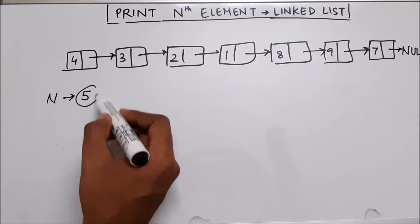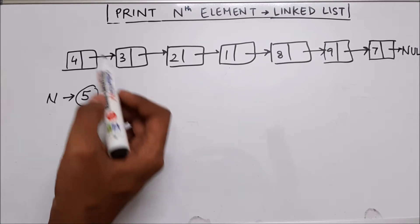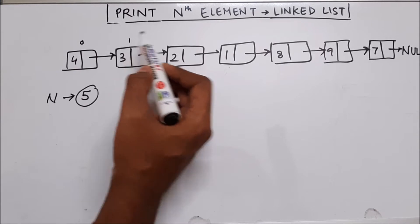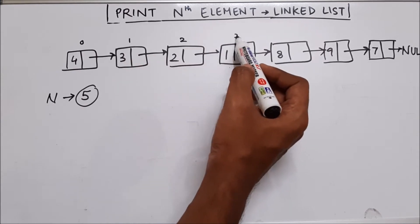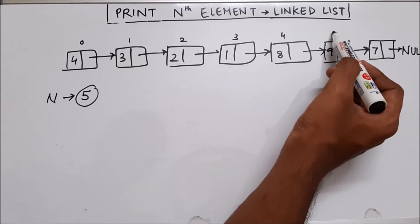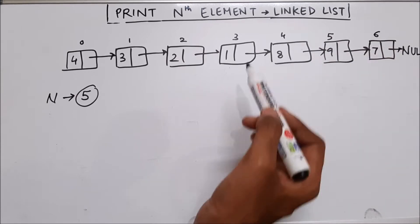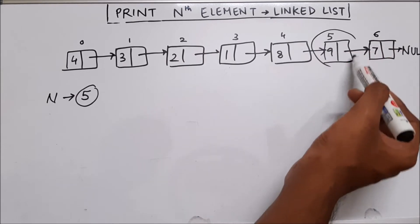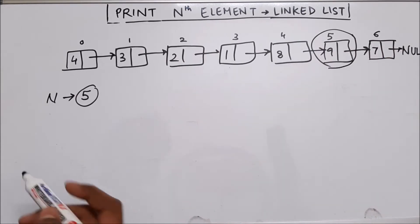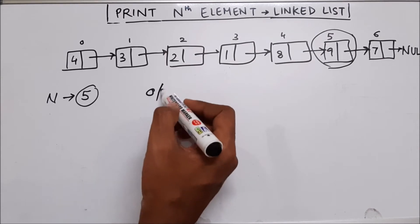So it means we have to print the fifth node. So if this is zeroth node, this is the first one, second, third, four, five and six. So we have to print the value in fifth node. So our output will be nine.